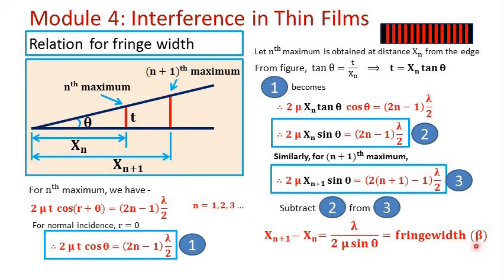This fringe width is denoted by beta. So the fringe width in the wedge-shape film experiment depends on the wavelength of the light wave used, the refractive index of the film, and the angle of the wedge. For an air film, the refractive index mu can be taken as 1. The fringe width in the wedge-shape film experiment is given by beta equal to lambda upon 2 mu sin theta.